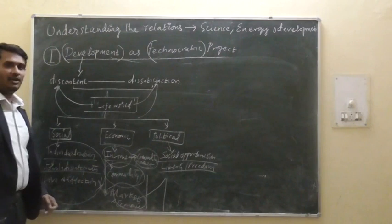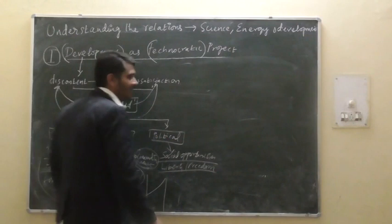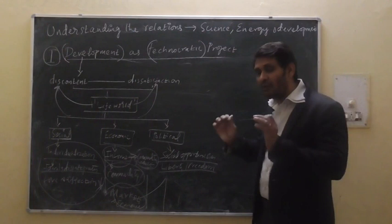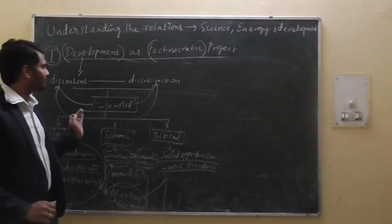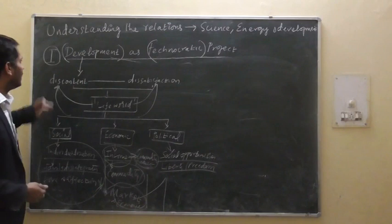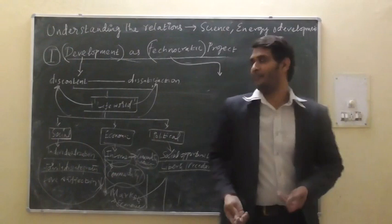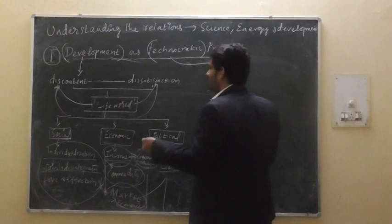Once dissatisfaction happens, we start questioning what this development is all about. We start examining how the development structure is constructed in a given nation-state. This broader idea of how development is theorized leads us to understand the process of how this development model has been evolved over time. It is basically part of the technocratic project. What is this technocratic project? It is that it is expertized knowledge.